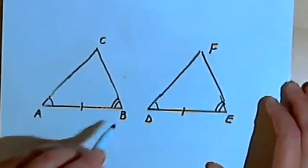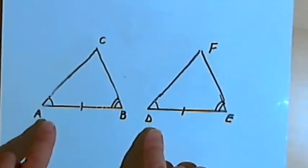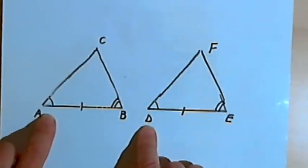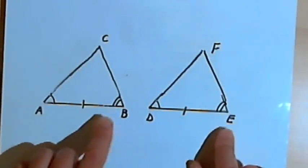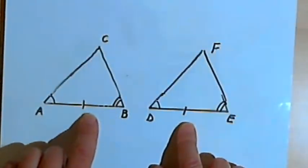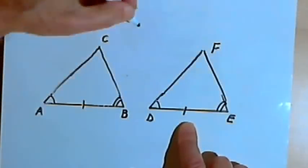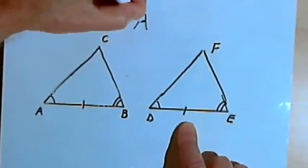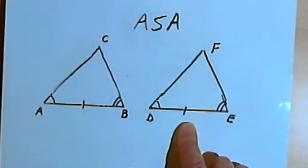What ASA says is: if we have two pairs of congruent angles, like pair A and D and pair B and E, and the included side between them is also congruent, then we're going to have two congruent triangles. This is angle-side-angle, or ASA congruence.